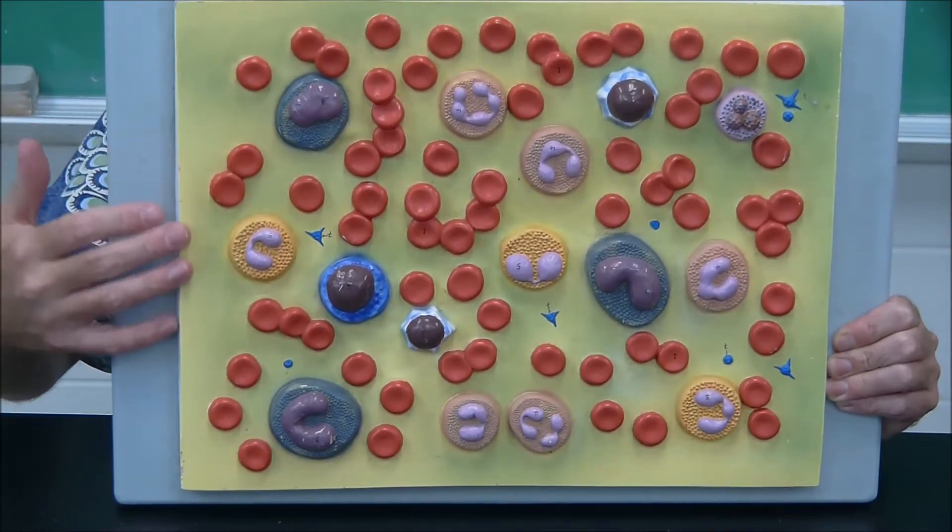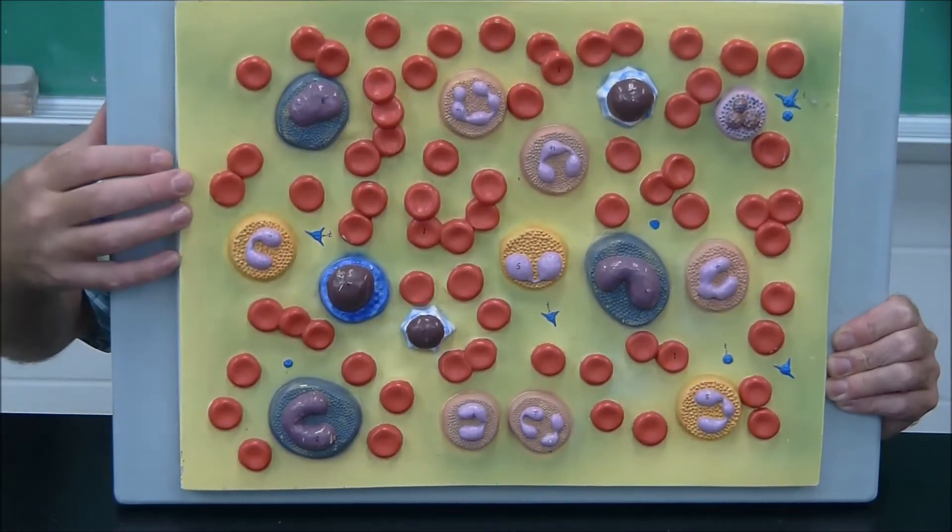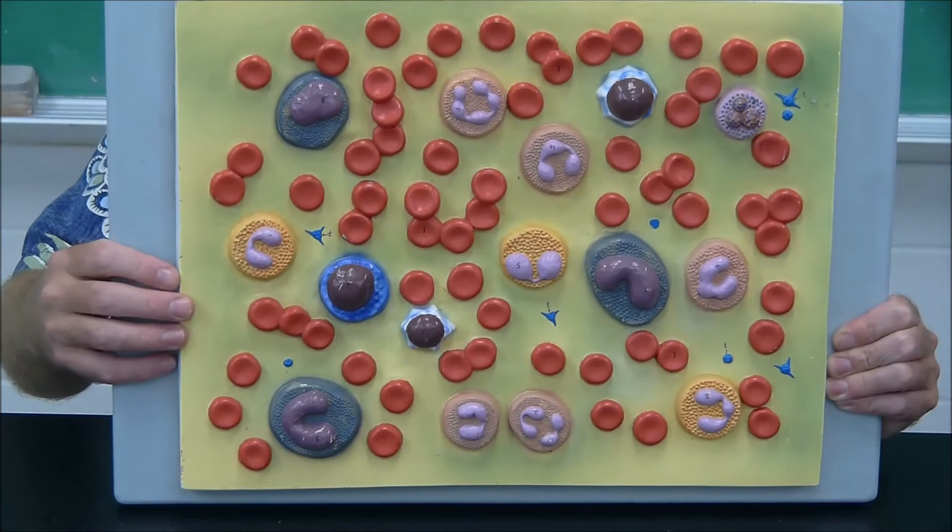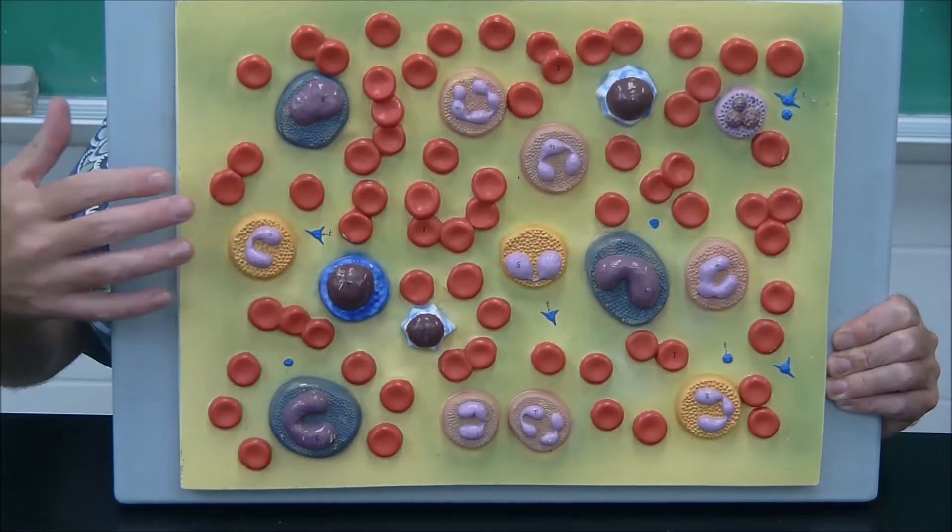It's also made up of the yellow stuff, which is our blood plasma. Blood is a connective tissue, and connective tissue has cells but also has an extracellular matrix, which in this case is the plasma.